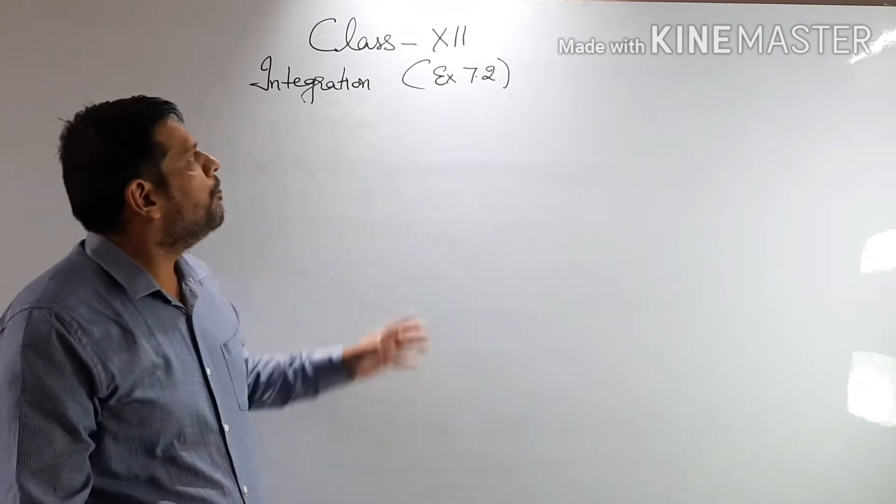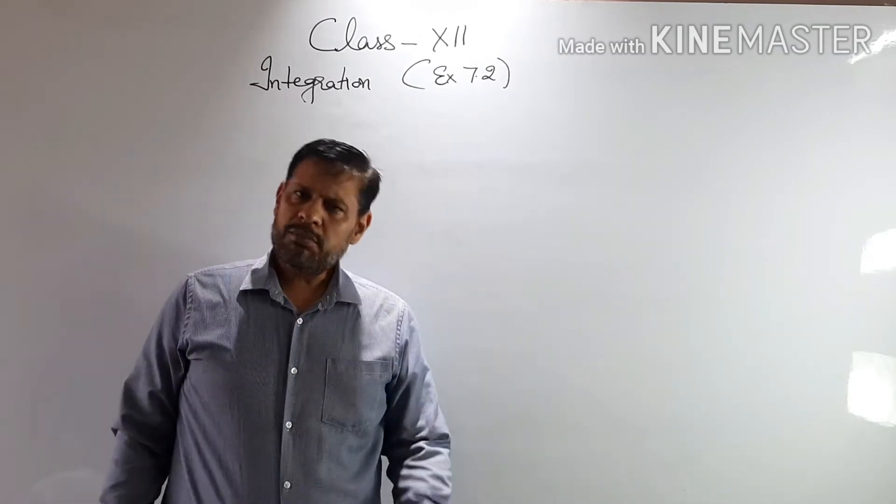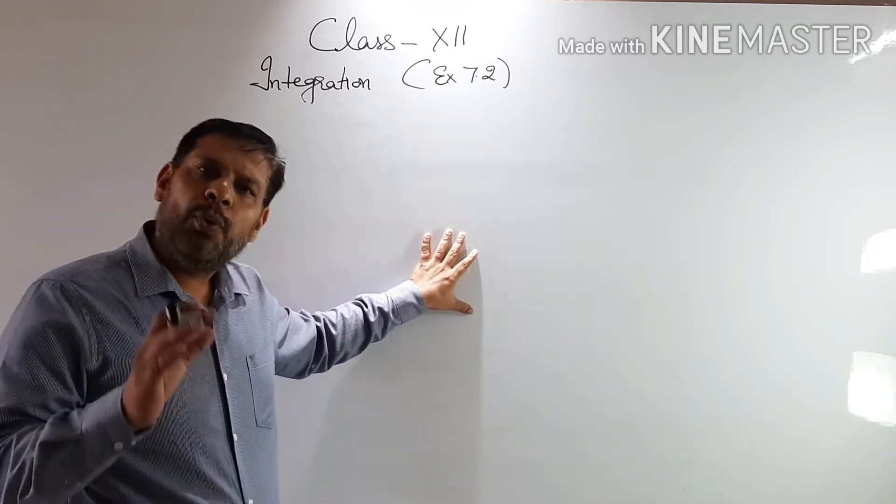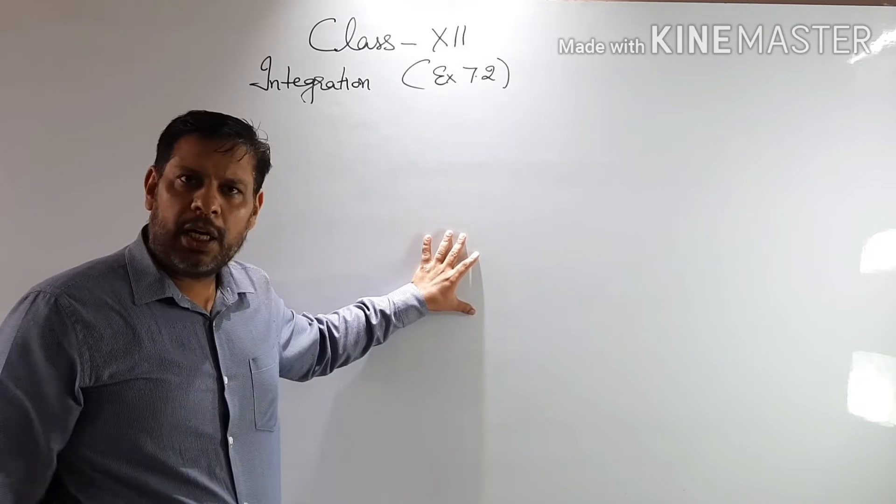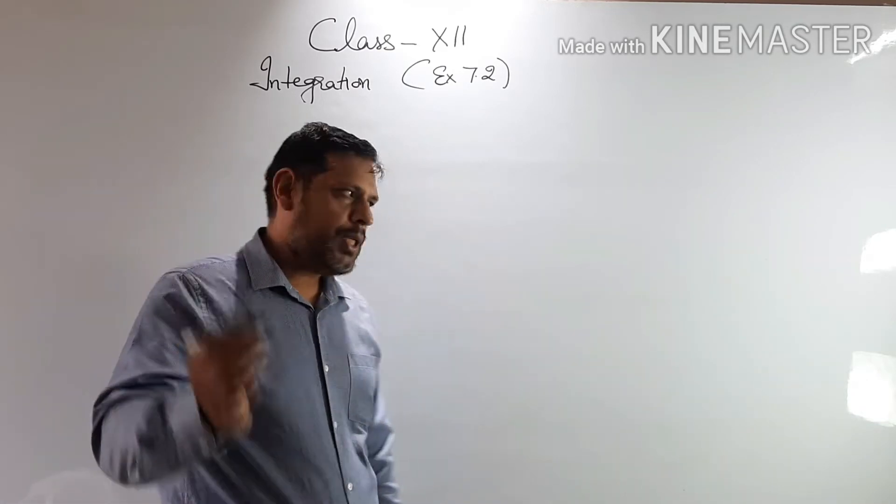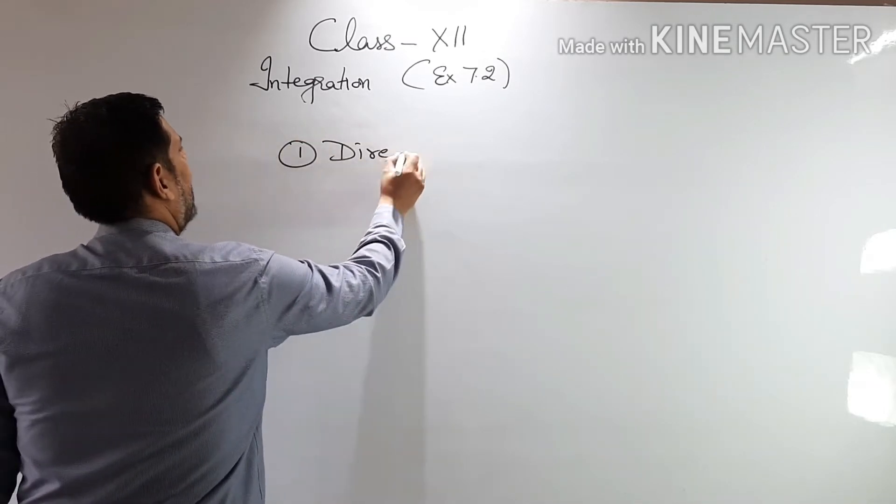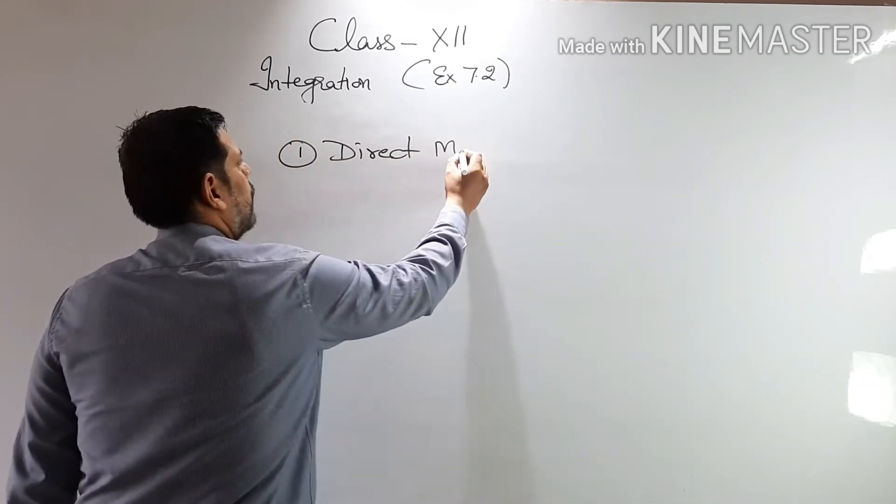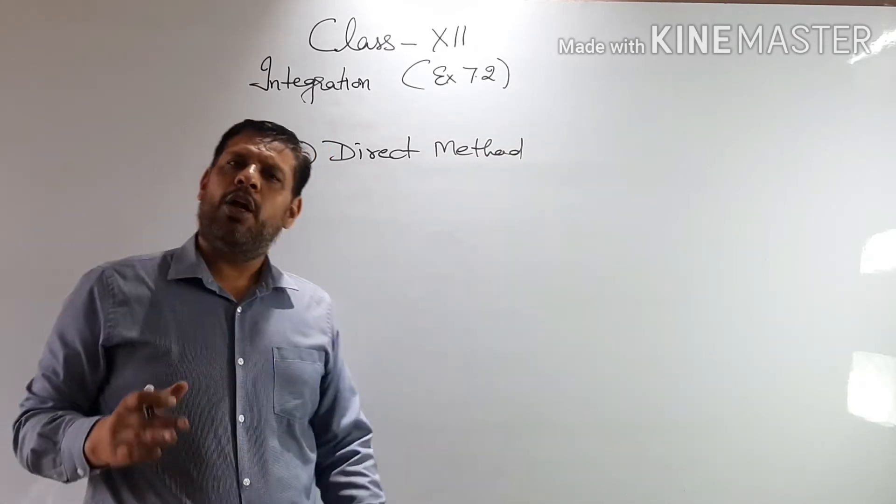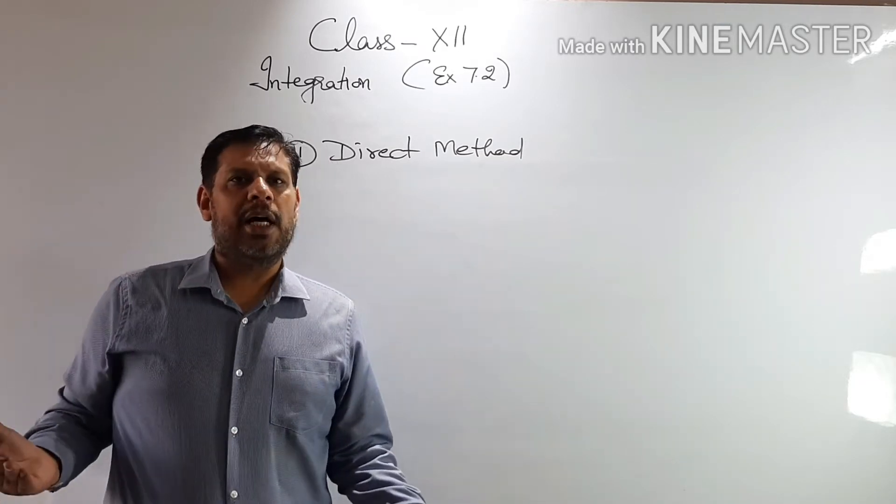So let's start up with the video. Today we will be discussing exercise 7.2. Before going to the exercise, I am going to tell you that we have 5 parts of the integral. The first one is the direct method, which we have done in exercise 7.1.